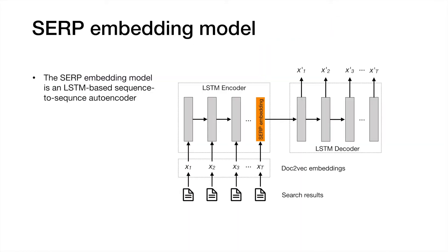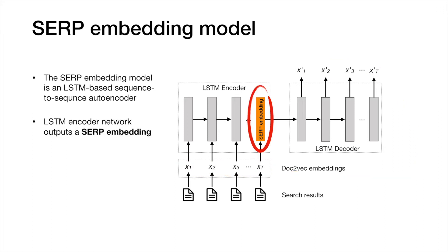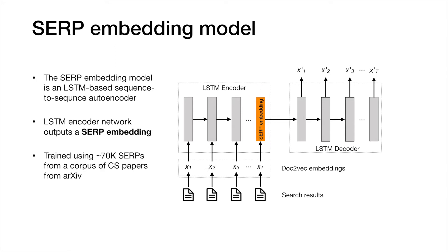We identify queries that would retrieve similar documents to those currently on screen using an embedding model which we refer to as the SERP embedding model. This model is a sequence-to-sequence autoencoder consisting of two LSTM networks — an encoder network and a decoder network. The model is trained by minimizing the reconstruction error between the input to the encoder and the output from the decoder. This allows us to use the final hidden state of the encoder as a learned representation of the results page — a SERP embedding. The network was trained on 70,000 artificially generated search results pages from a corpus of computer science papers from arXiv, with data augmentation increasing training examples to around 300,000.